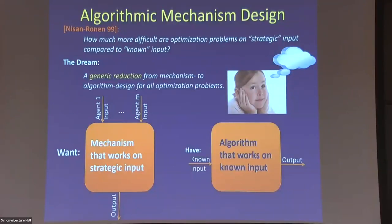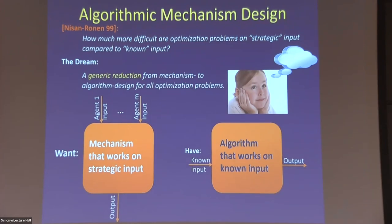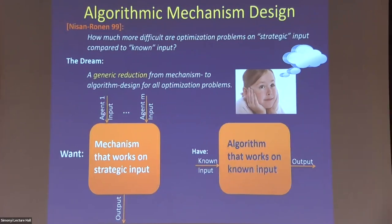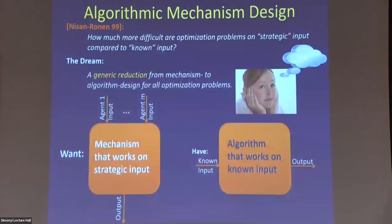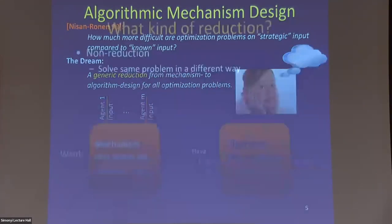In addition to solving the combinatorial or analytical problem, we also need to worry about getting correct inputs and inducing good behavior from the entire system. There are tons of examples of how good algorithms can turn into really bad mechanisms. Algorithmic mechanism design as a field tries to understand how much of an extra condition it is to worry about agents reporting — and one dream of the field is a generic reduction that takes an algorithm and produces a functionally identical mechanism.